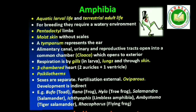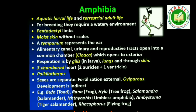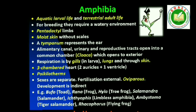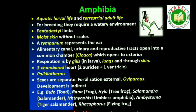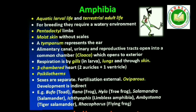Fourth is Class Amphibia. As the name indicates (Greek: amphi — dual; bios — life), amphibians can live in aquatic as well as terrestrial habitats. Most of them have two pairs of limbs. Body is divisible into head and trunk. Tail may be present in some. The amphibian skin is moist without scales. The eyes have eyelids. Tympanum represents the ear. Alimentary canal, urinary and reproductive tracts open into a common chamber called cloaca, which opens to the exterior. Respiration is by gills, lungs and through skin. The heart is three-chambered — two auricles and one ventricle. These are cold-blooded animals. Sexes are separate. Fertilization is external. They are oviparous and development is indirect. Examples: Bufo (toad), Rana (frog), Hyla (tree frog), Salamandra (salamander), Ichthyophis (limbless amphibia).